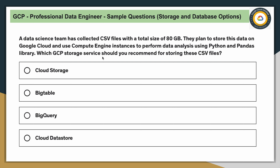Moving to question two. A data science team has collected CSV files with a total size of 80 GB. They plan to store this data on Google Cloud Platform and use Compute Engine instances to perform data analysis using Python and the Pandas library. Which GCP storage service should you recommend for storing these CSV files? CSV files are structured data, and the team wants to use Compute Engine with Python and Pandas.